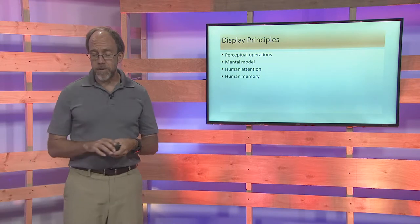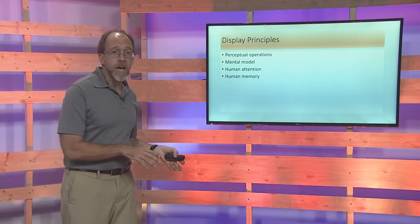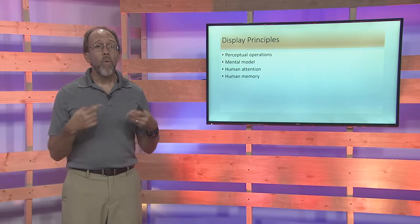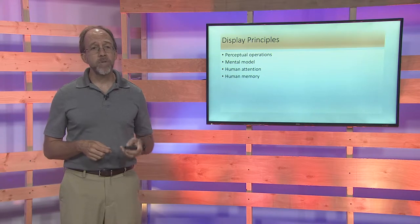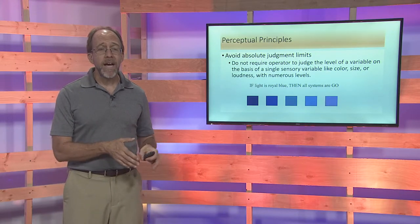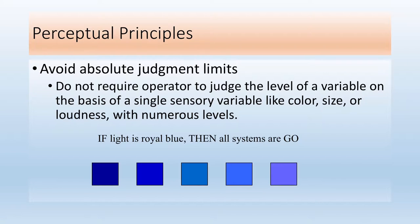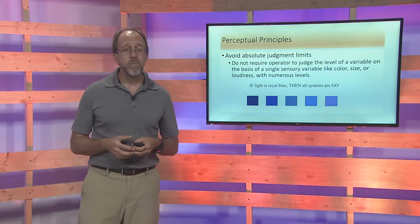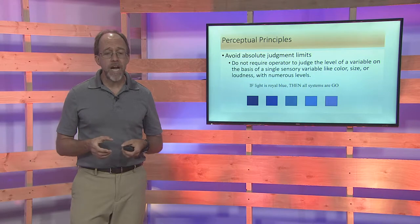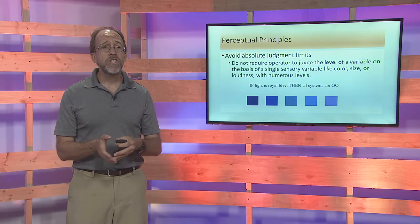The basic display principles on the human side that you've got to think about are perception, the mental model, attention, and memory. First, let's look at perception. Perception means the user has got to be able to perceive what is meant by the display, especially if there's an associated action. A great example: if you tell the user to take an action when the color of blue gets to royal blue — really? That's a limit that most people are going to have a really difficult time with. But we deal all the time with displays that have graduated colors, and there needs to be more information. Don't require this type of perception to be used to take a specific action.